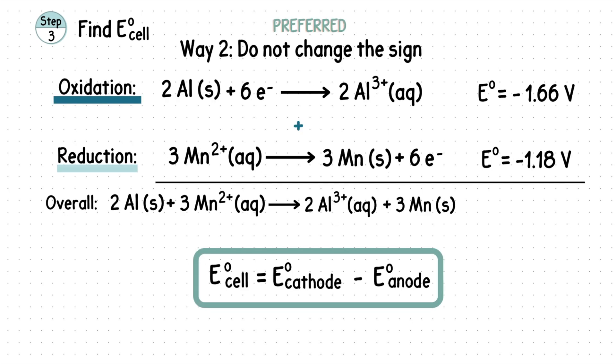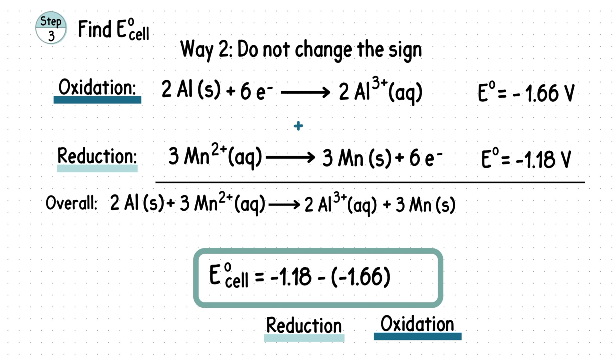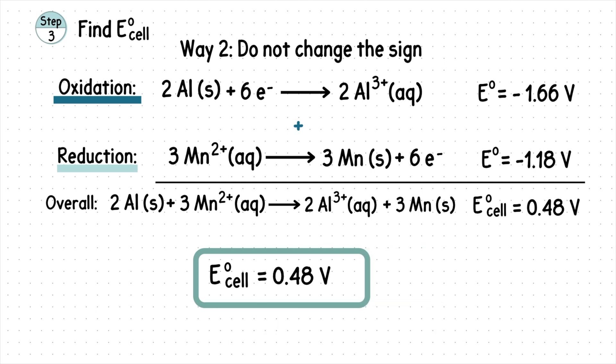Way 2, which is my preferred method, is not changing the sign. Instead, we would use the following formula. Where reduction refers to the cathode and oxidation refers to the anode. So we would plug in the corresponding values and continue with the math to get the same value as before.